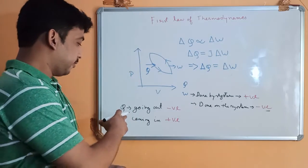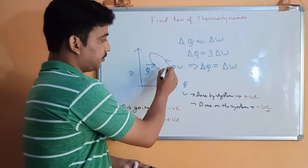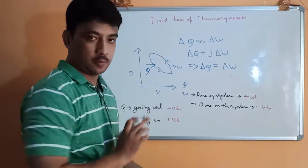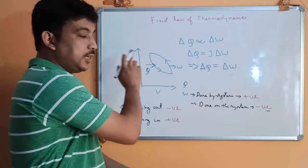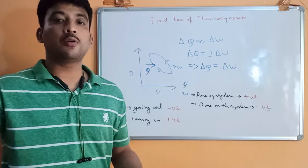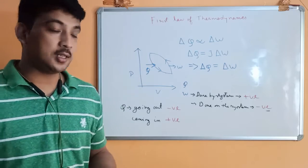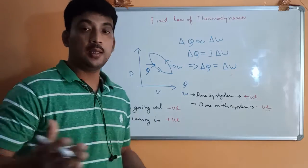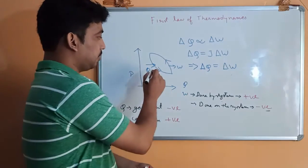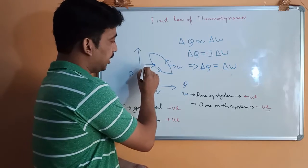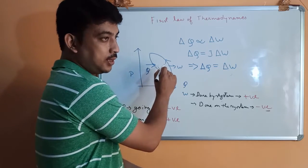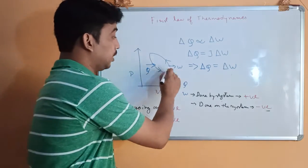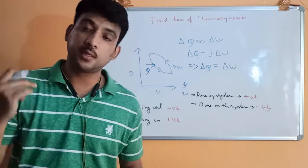In the case of Q: if work is going outside of the cycle, it is positive work. But heat going in is positive, and heat going out is considered a loss of heat — so heat going out is negative and heat coming in is positive. To remember the directions: if heat is in the direction of the cycle, it is positive; if heat is going out, that is negative. Work going out is positive; work coming in is negative.